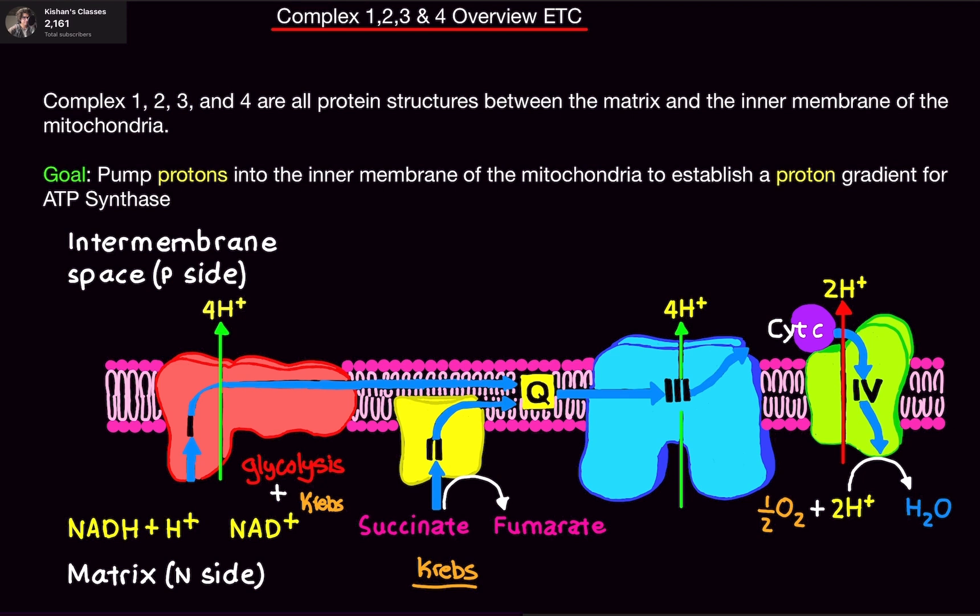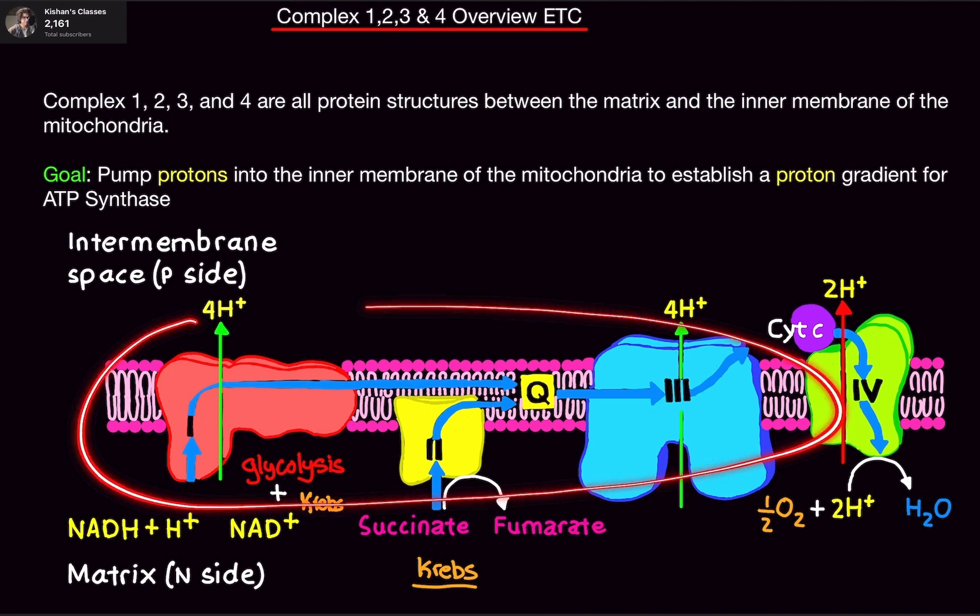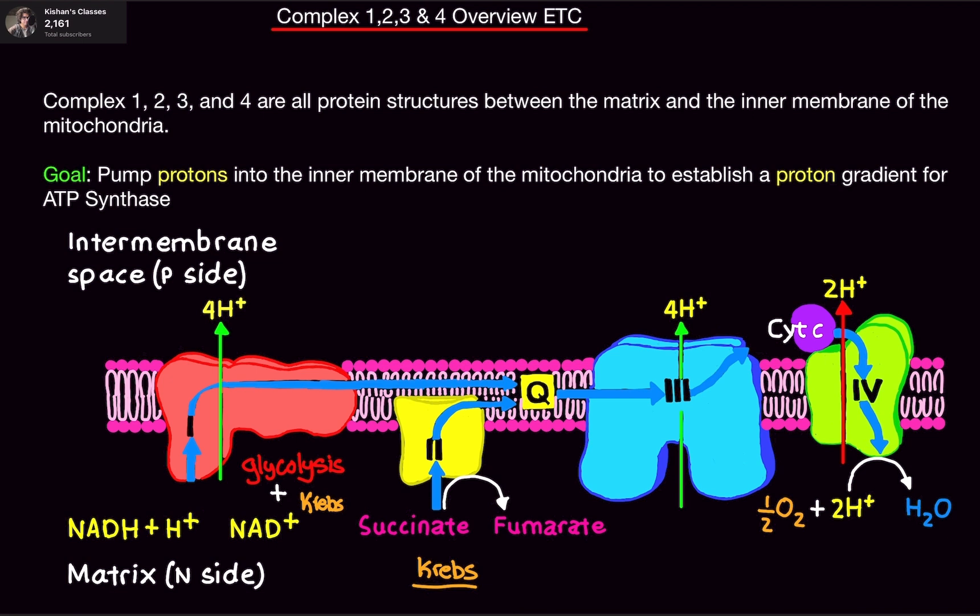Now, Complex 1, 2, 3, and 4 are all protein structures that are embedded between the matrix of the mitochondria and the inner membrane space of the mitochondria. And its goal is to pump protons from the matrix side to the inner membrane side to establish a proton gradient to power ATP synthase.